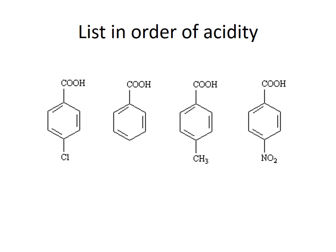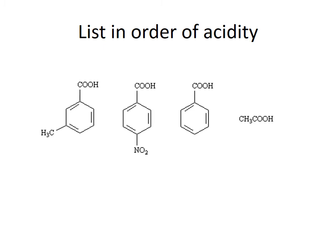List these in order of acidity. The most acidic compound will be the one with the most electron-withdrawing group — that's going to be the nitrobenzoic acid. Next would be the chlorobenzoic acid. Having no substituent is more acidic than having an electron-donating methyl group. So the order is: nitrobenzoic acid, then chlorobenzoic acid, then benzoic acid, then methylbenzoic acid. For the next set: the electron-withdrawing group makes benzoic acid most acidic, then no group, then the methyl which is electron-donating. Last of all is acetic acid, which is slightly less acidic than benzoic acid.